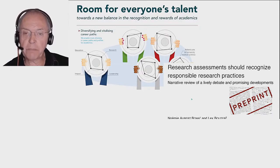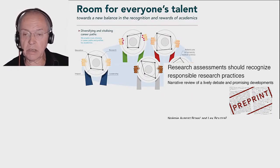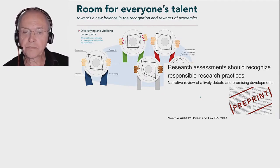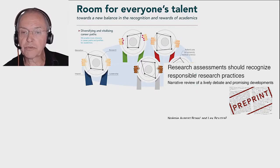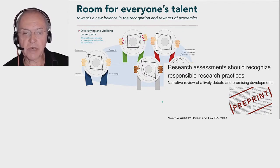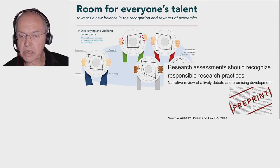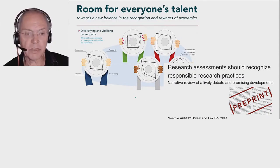I'd like to allude to this preprint — another preprint. This is a narrative review of many other things you can do when you want to improve researcher assessment, with a lot of practical advice as well. So I recommend this publication, though I should note I have a small conflict of interest here.